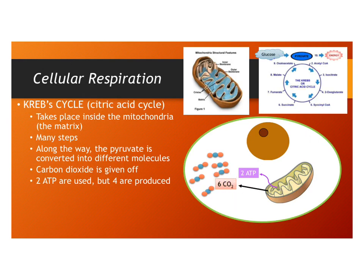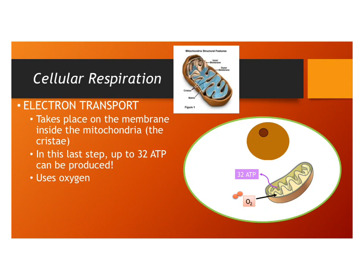In the final step of cellular respiration, called electron transport, it's a very complicated process. It takes place on the membrane inside the mitochondria, which is called the cristae — all that folded up membrane on the inside. In this last step, up to 32 ATP can be produced. This is the oxygen-requiring step. Think about one molecule of glucose: if you're a bacteria or yeast cell, you get two ATP. But if you're a eukaryotic cell — like an animal or plant cell — you get possibly 36 ATP for every glucose molecule. Much more efficient.